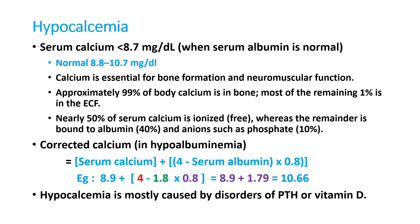Calcium is very important for bone formation and the neuromuscular junction. Acute hypocalcemia produces neuromuscular irritability, while chronic hypocalcemia produces bone loss. Approximately 99% of body calcium is inside bone; the remaining 1% is in the extracellular compartment. Of that, nearly 50% of serum calcium is ionized or free, while the other 40% is bound.